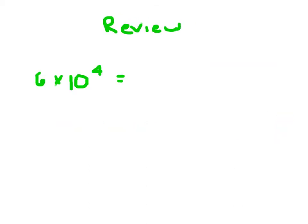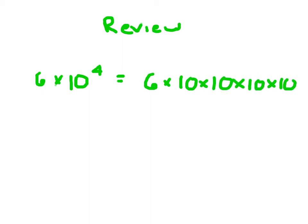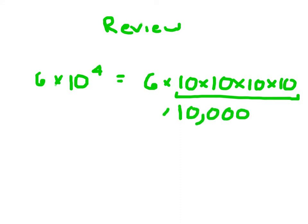Let's go ahead and review. That's 6 times 10 to the fourth, which means 6 times 10 times 10 times 10 times 10. I know that 10 to the fourth actually just evaluates to 10,000. So 6 times 10,000 is equal to 60,000.